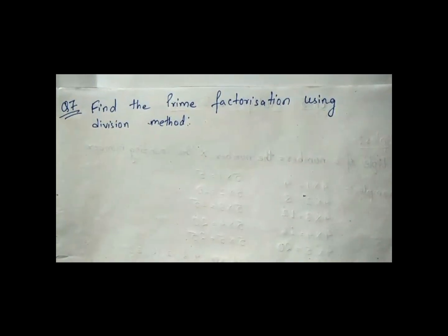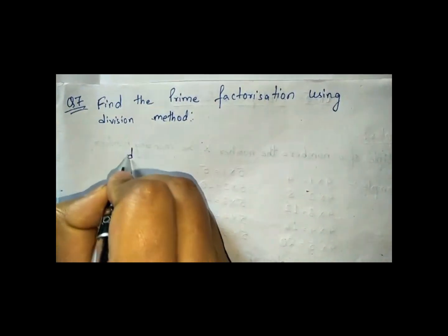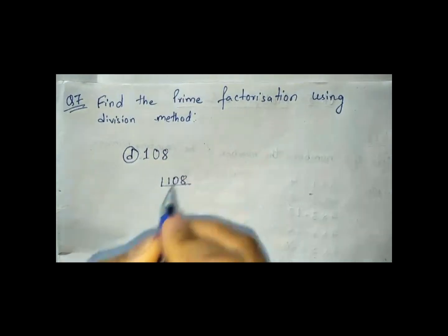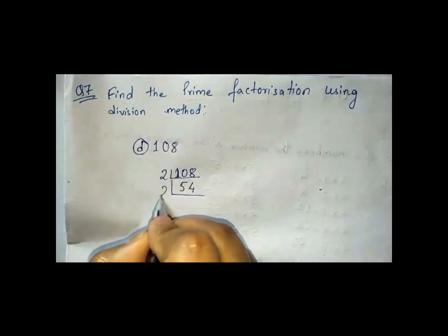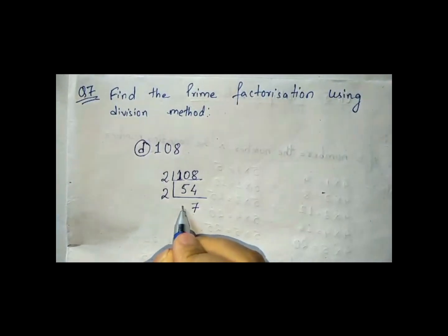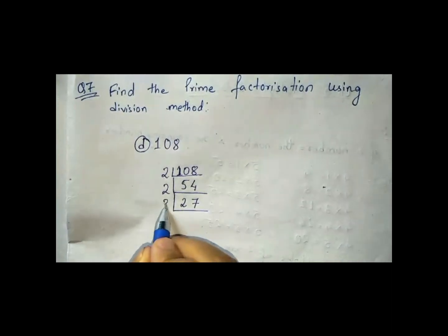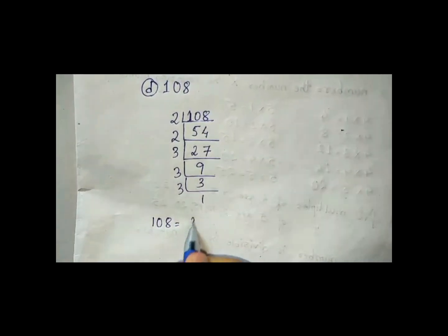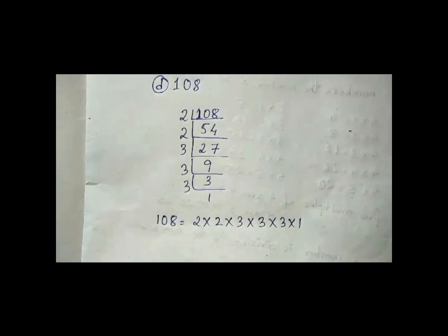Next, question 7: find the prime factorization using the division method. We will solve question D. We divide step by step — first dividing by 2 repeatedly, then by 3. So the prime factors of 108 are 2 × 2 × 3 × 3 × 3.